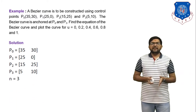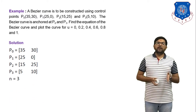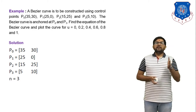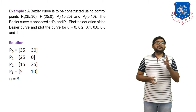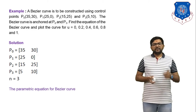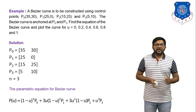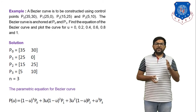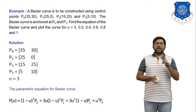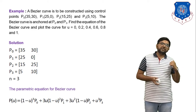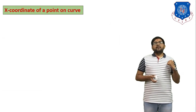The given data: P0(35,30), P1(25,0), P2(15,25), P3(5,10), and n = 3. The parametric equation of the Bezier curve for three vertices is: P(u) = (1−u)³·P0 + 3u(1−u)²·P1 + 3u²(1−u)·P2 + u³·P3. This equation was derived in the last session. Now we derive the equation for the x-coordinate.